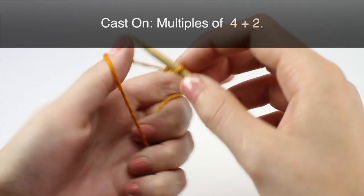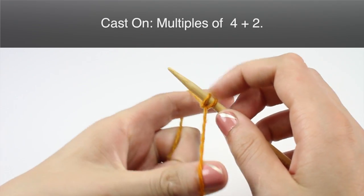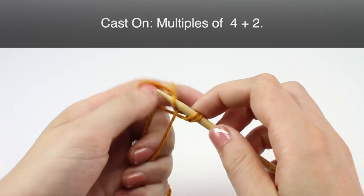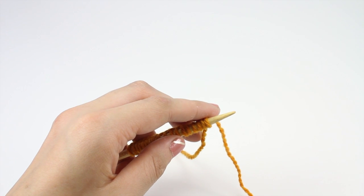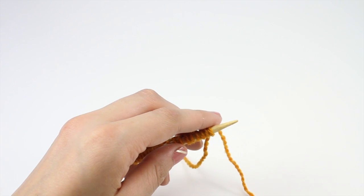To begin this stitch you will need to cast on in multiples of four plus two. Stitches should not be counted after the third row.